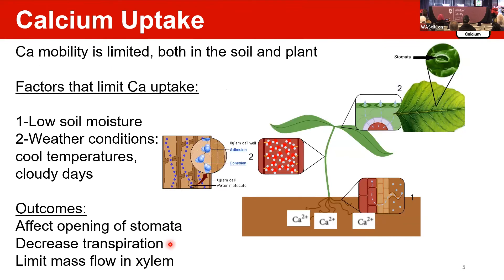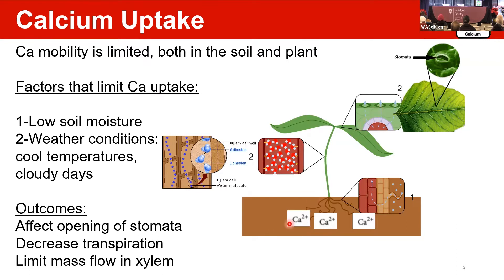About calcium uptake: as mentioned, calcium mobility is limited in the soil and in the plant as well. There are factors that limit calcium uptake, like low soil moisture. Some weather conditions — like cold temperatures and cloudy days — can affect stomata opening and decrease transpiration in the leaves. This can limit mass flow in the xylem, reducing calcium uptake from roots to fruits and leaves.